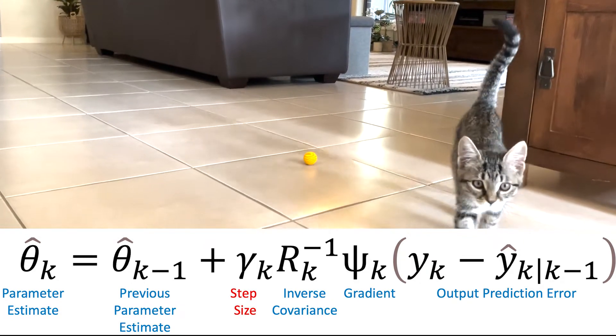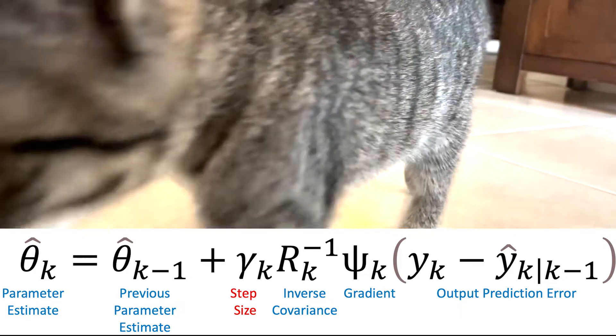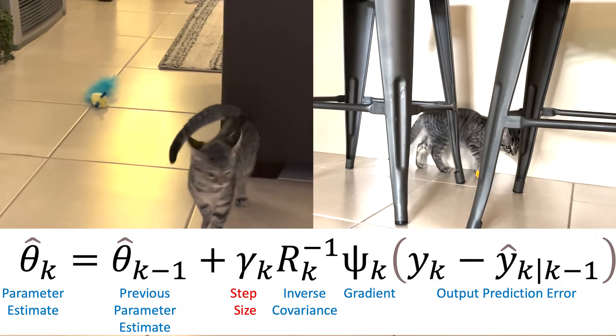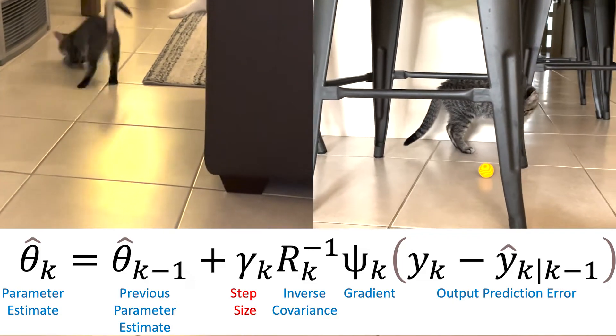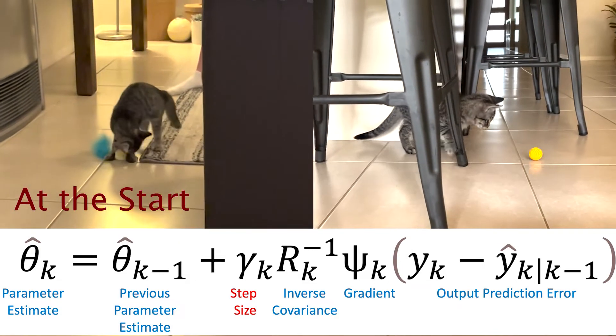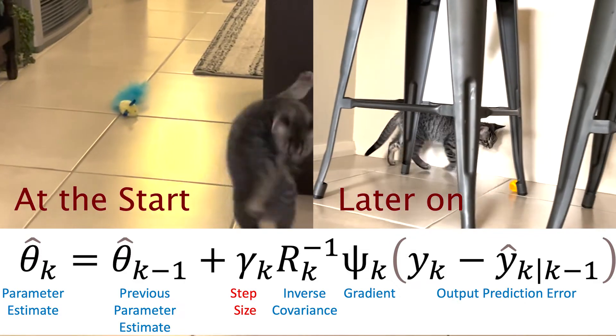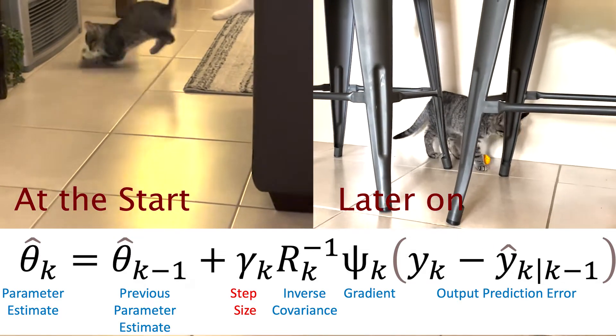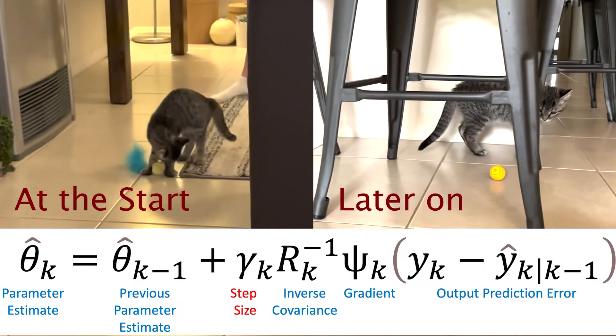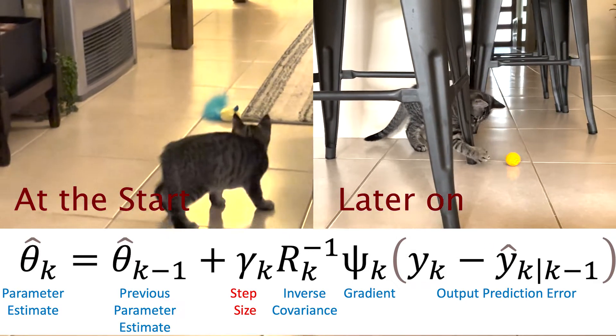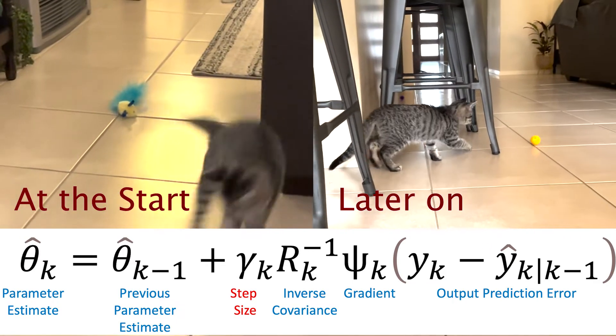And importantly, there's the step size. The choice of the step size is important. What Misty has shown us is that when you start, you want to have a big step size. But as time goes on, you want the step size to reduce. As you learn more about the estimates and you move down the gradient, you don't want to be as reactive as you were at the start.